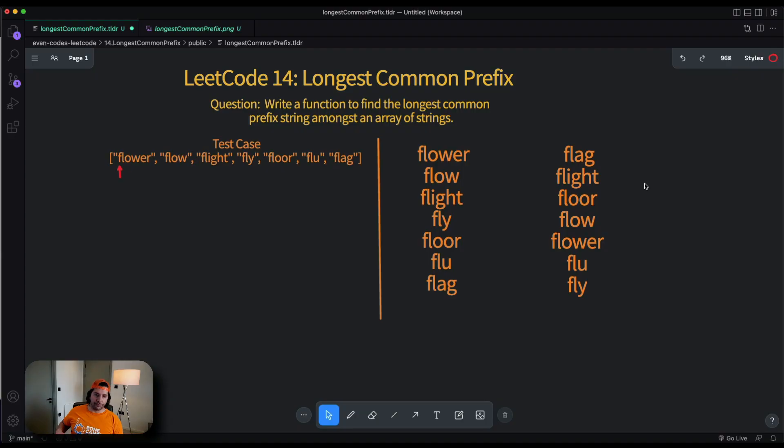If you don't want to watch my explanation, please move to the second part of this video where I'm going to illustrate my optimal solution code. So without further ado let's move to the board now. The first thing that we need to do is to understand the problem. The question reads: write a function to find the longest common prefix string amongst an array of strings.